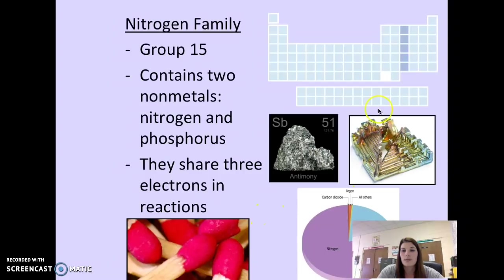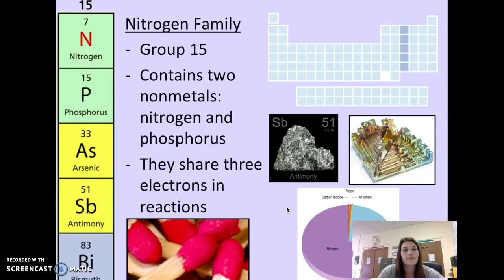Antimony, this is bismuth, is another example. Also, they share three electrons in reactions. A couple of uses for things like antimony. Antimony is found in batteries, paints, in flame proofing things like ceramic tiles or pottery. Bismuth, a lot of times you combine it with other elements to make an alloy, and you find bismuth in things like fire extinguishers and fire detectors.